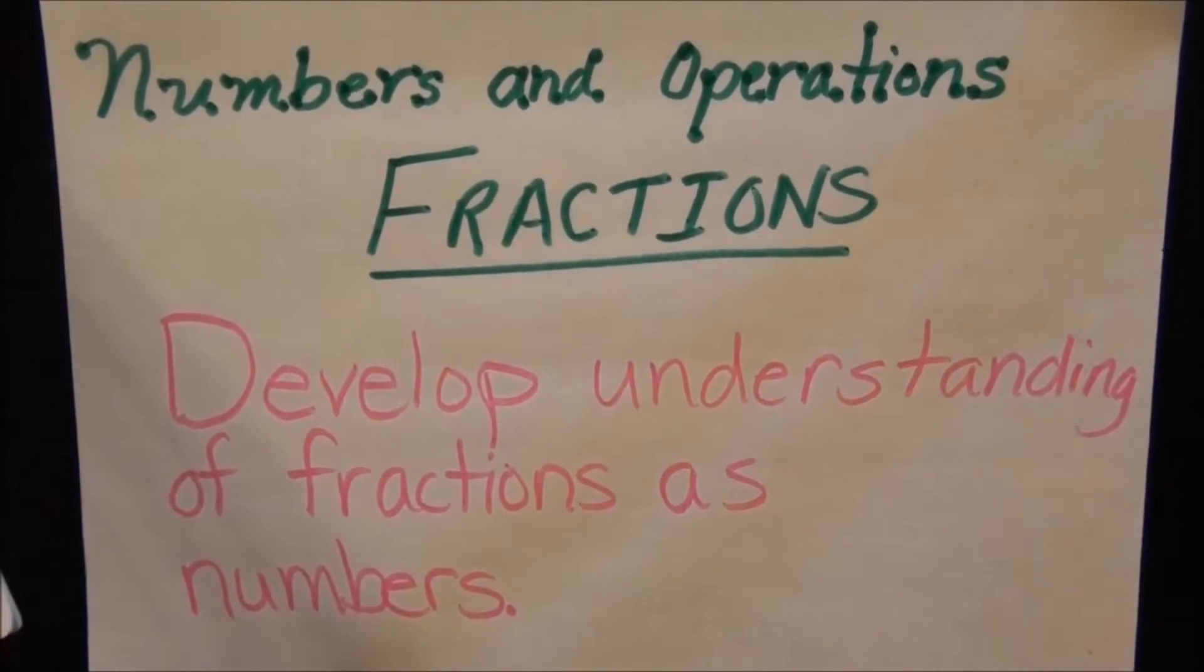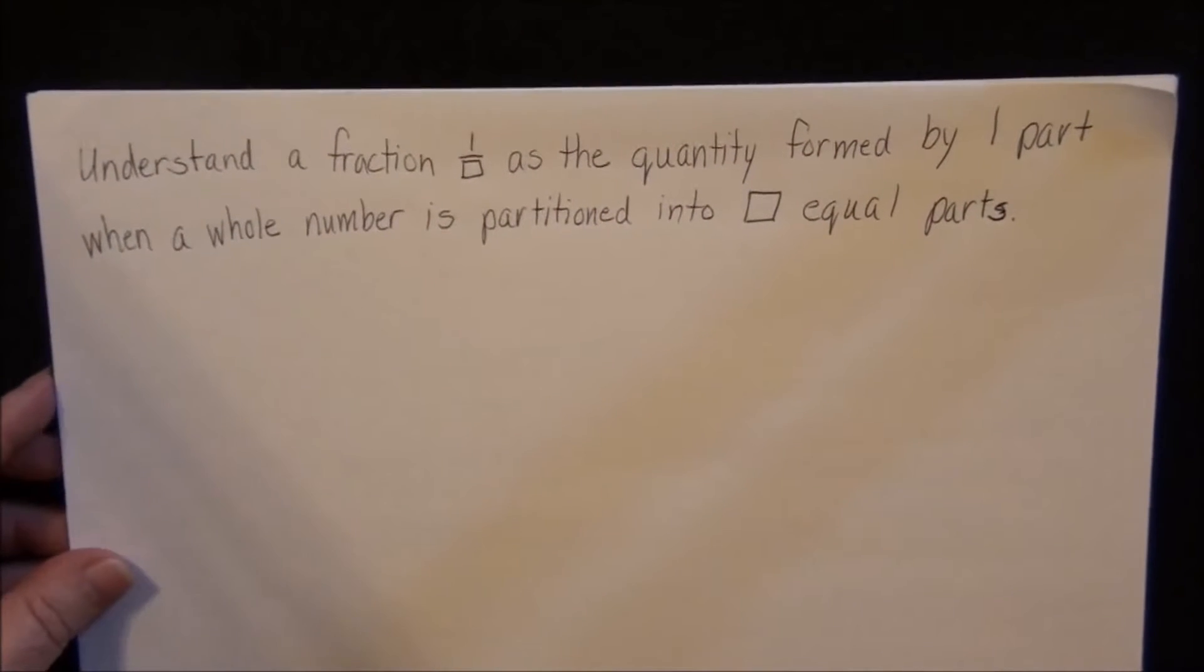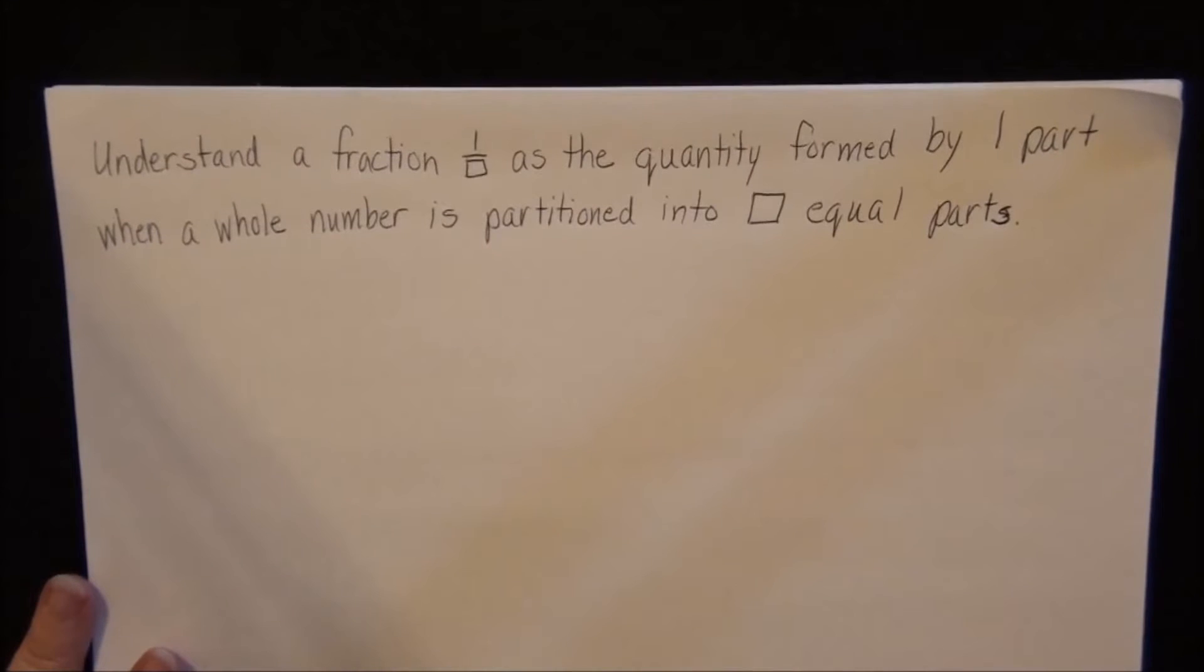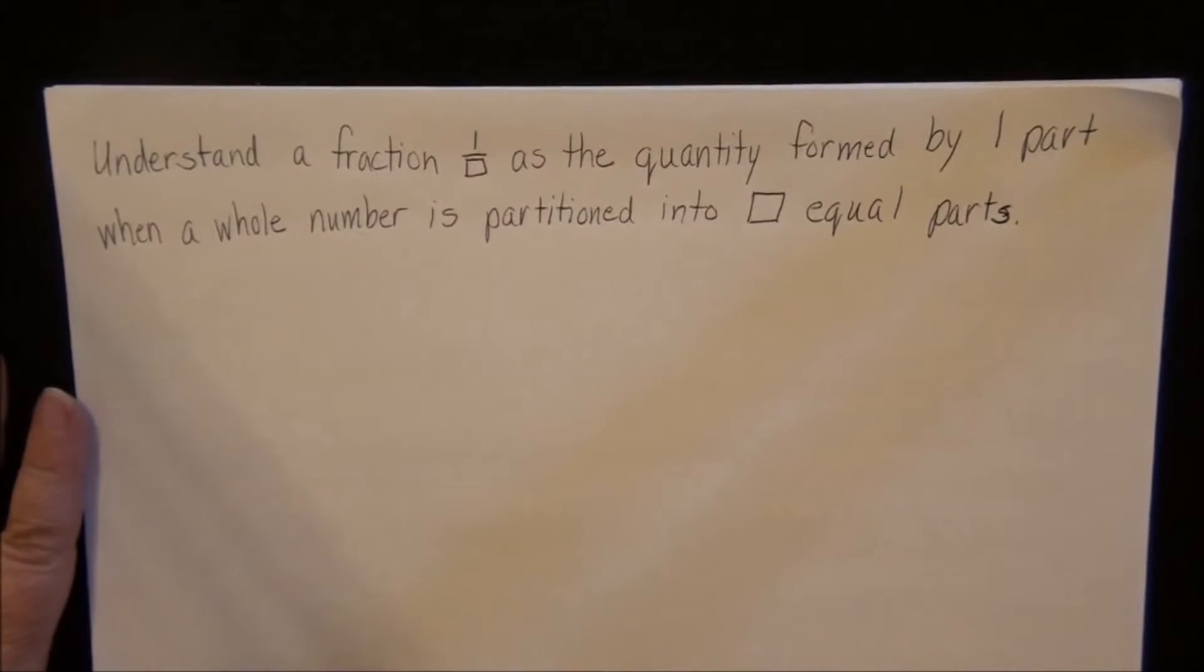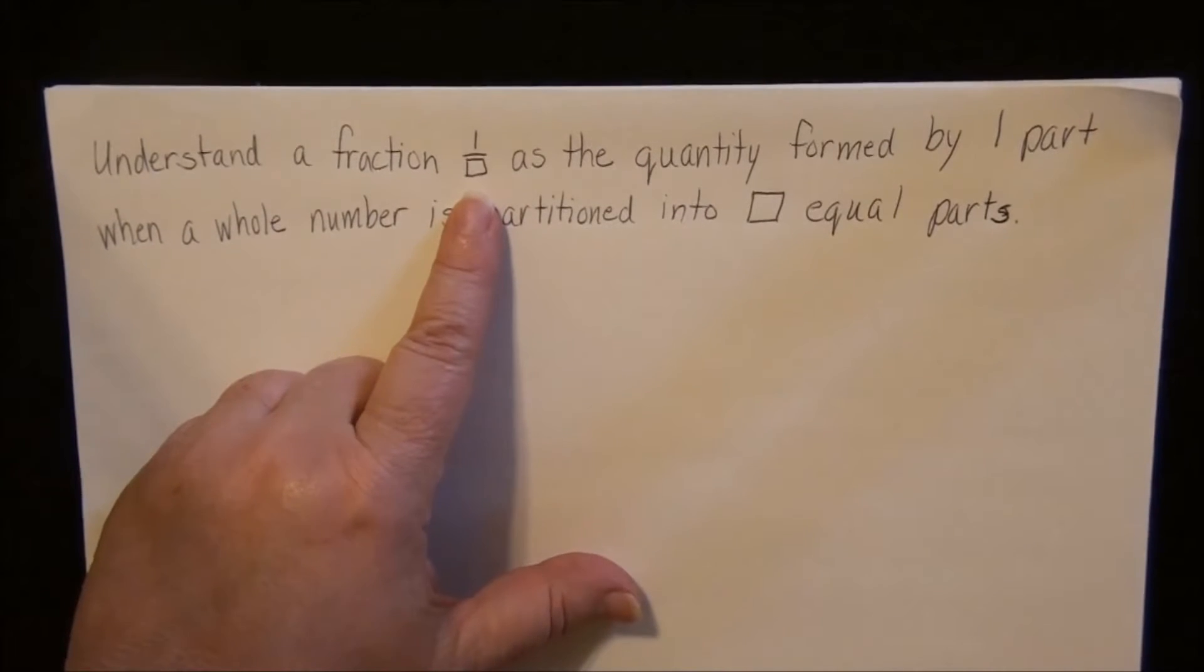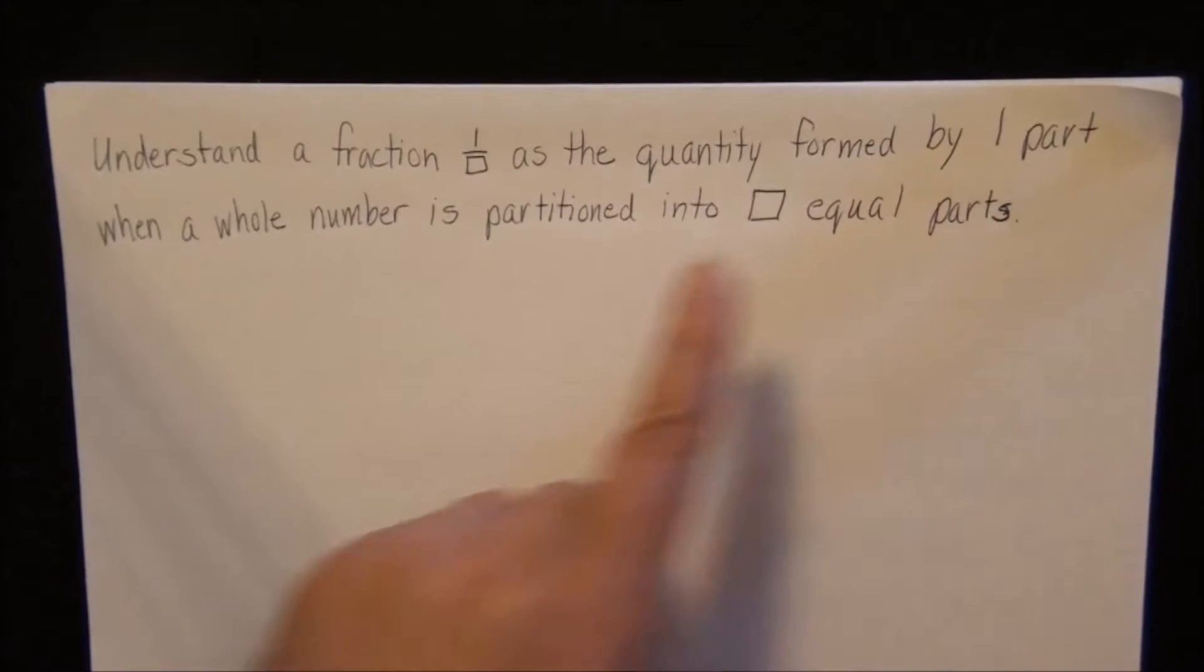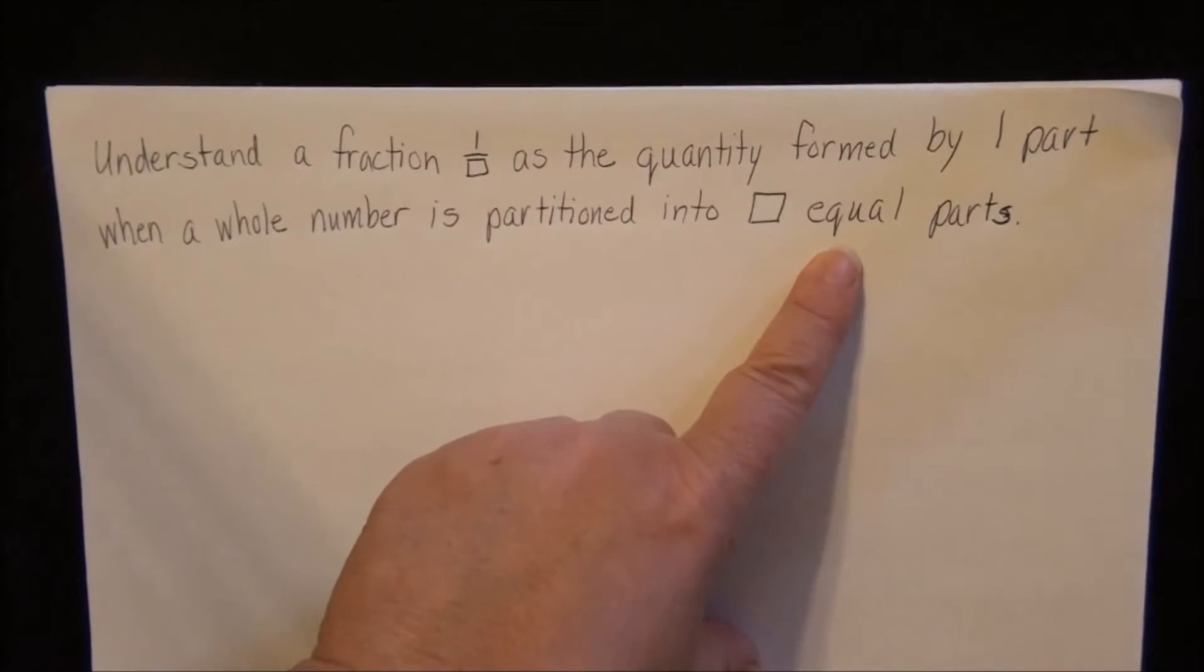So getting started with our first lesson, our first objective. These objectives are written in grown-up math words, and I'm going to go over them with you and explain the words so that you'll understand what it is that we're doing. In this lesson, you will understand a fraction 1/blank as the quantity formed by one part when a whole number is partitioned into blank equal parts.